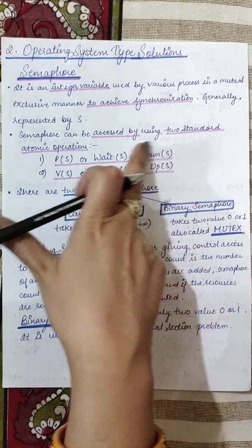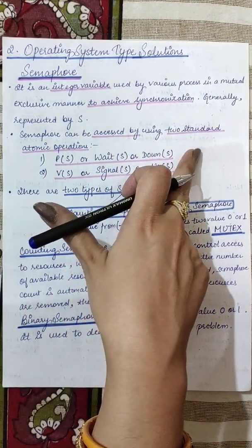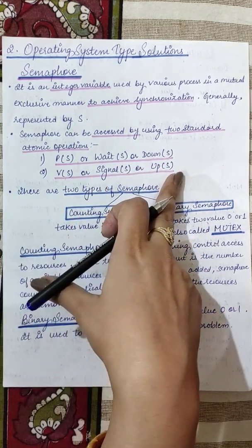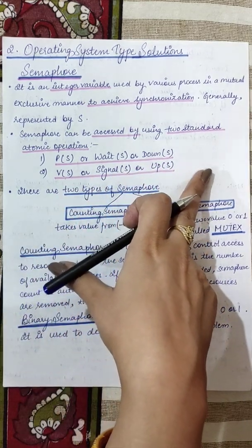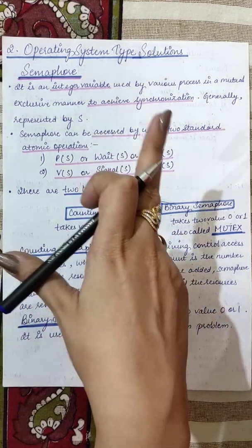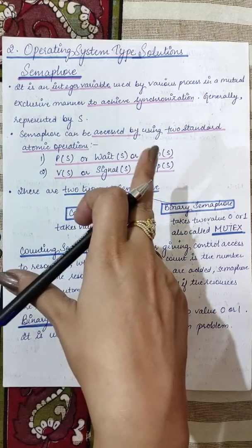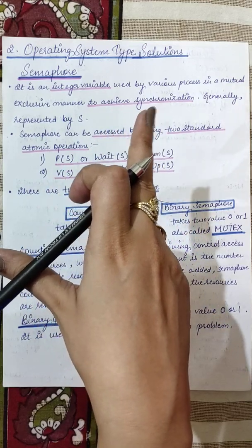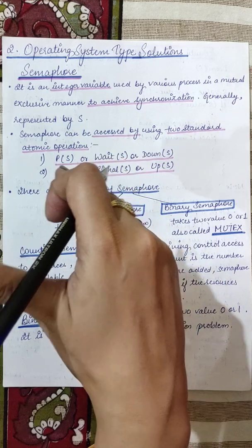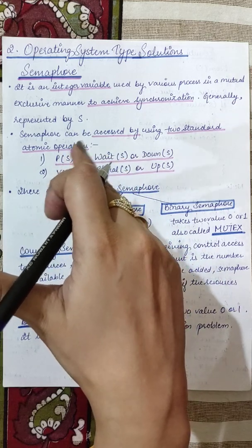जो Wait या Down operation है, उसमें decrement operation perform होता है. V, Signal, या Up वाले से हम increment operation perform करते हैं semaphore पे. So semaphore एक integer variable है जिसको use किया जाता है for achieving synchronization — जो processes में data inconsistency या race condition की problem आ रही थी, उसे avoid करने के लिए.